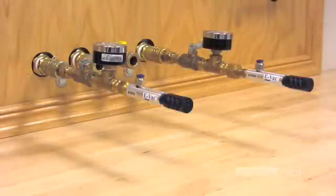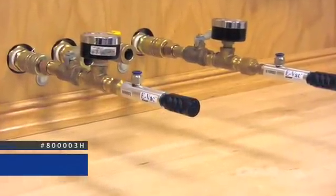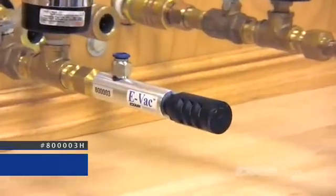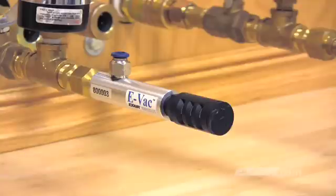Second model, 800003H, is a low vacuum generator for porous applications. Low vacuum units will generate up to 21 inches of mercury, which is 71 kilopascals, and they're typically used for porous applications such as cardboard and delicate materials.